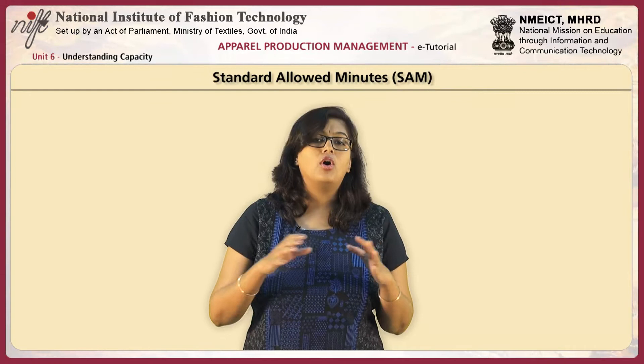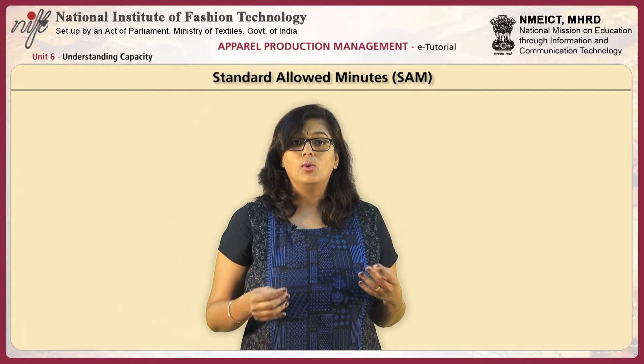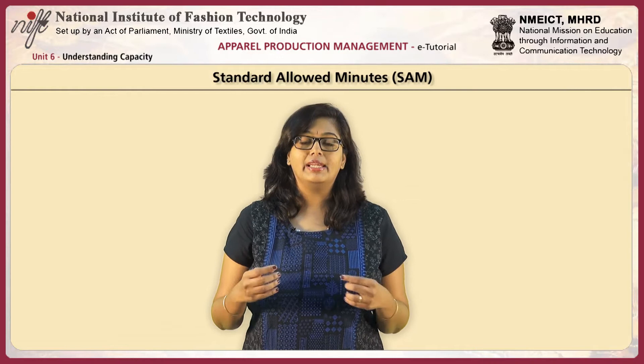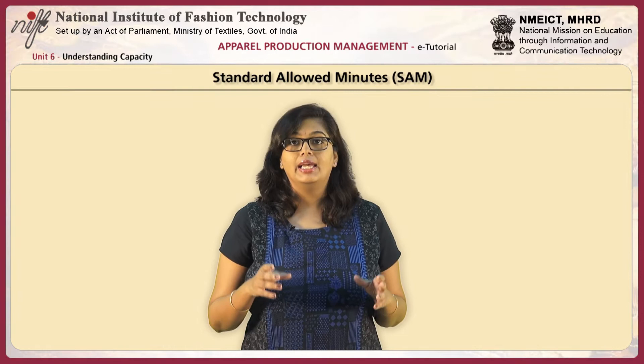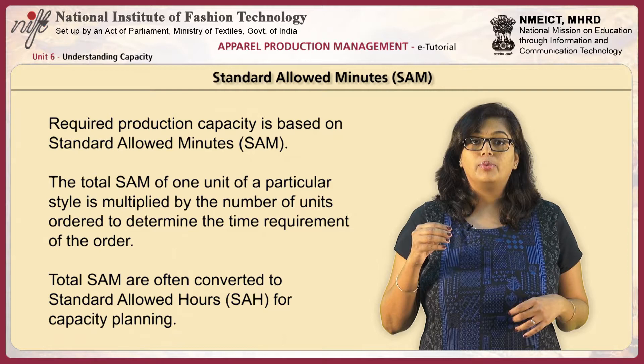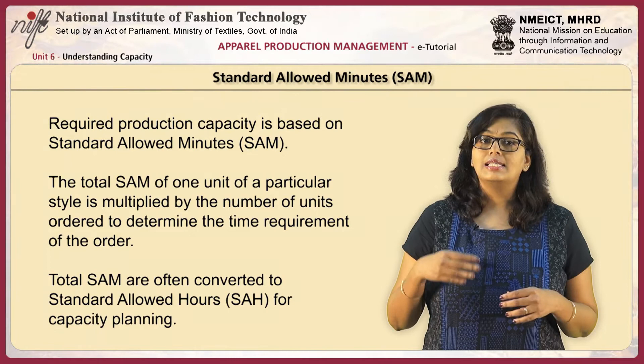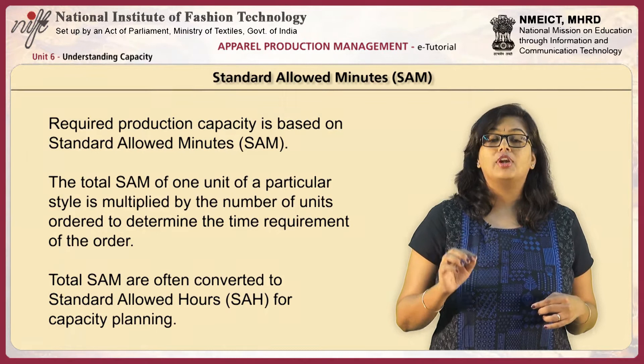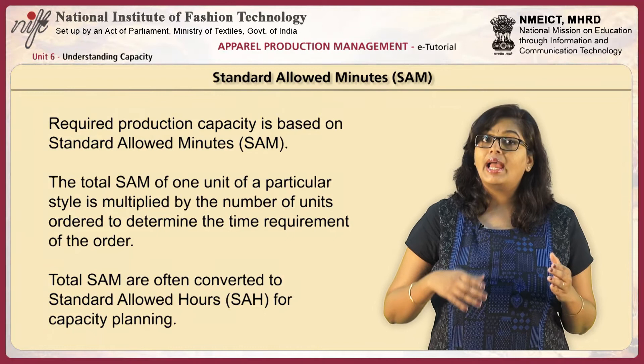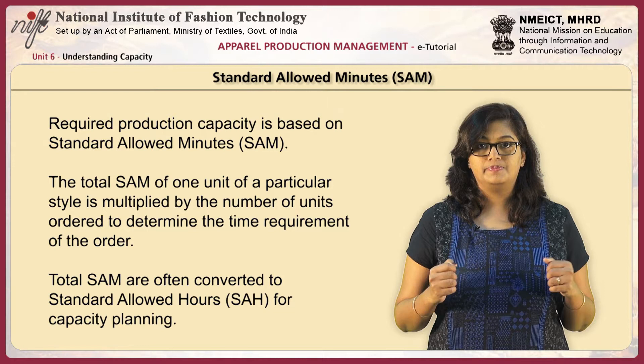In all these calculations, there is a terminology called SAM which keeps coming up. SAM stands for Standard Allowed Minutes — one of the most common and important terminologies in garment production. Required production capacity is based on SAM. Standard allowed minutes basically refers to the time taken for a garment to get completed — it is the allocated standard time for completion. This is generally used on the sewing floor and is integral in capacity calculation.